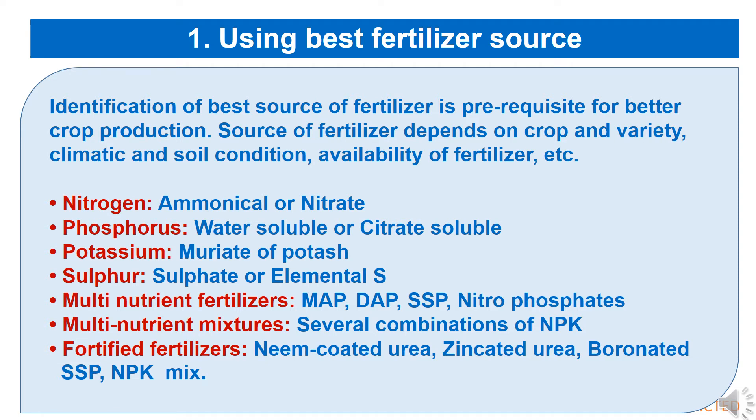For phosphorus, water-soluble or citrate-soluble fertilizers are to be preferred. In the case of potassium, muriate of potash is used. For sulfur, sulfate or elemental sulfur is recommended. Multi-nutrient fertilizers like MAP, DAP, SSP, and nitrophosphates are also available options.